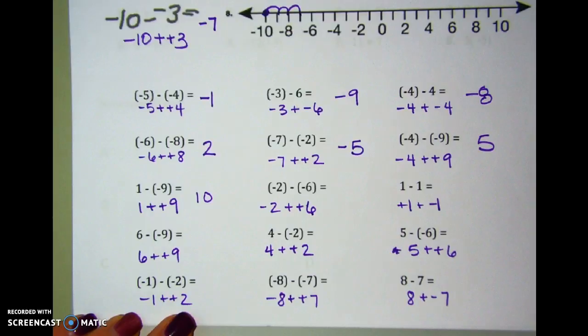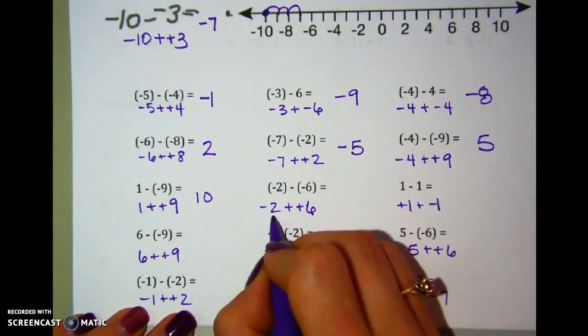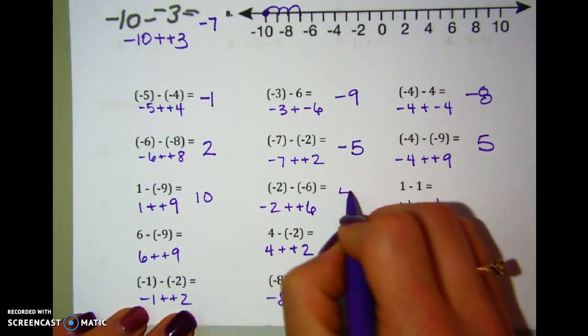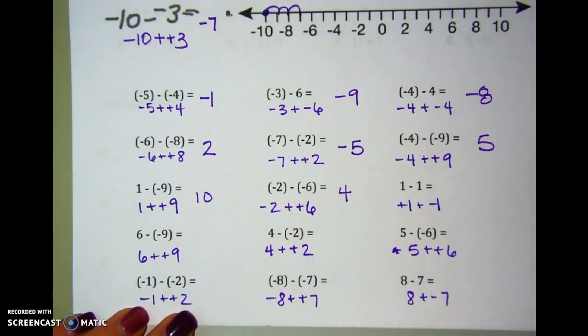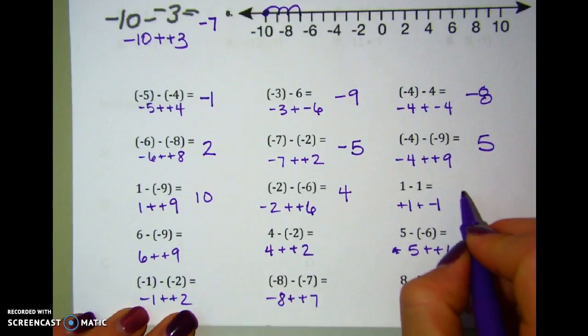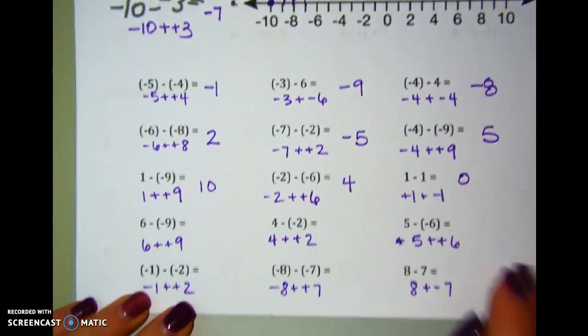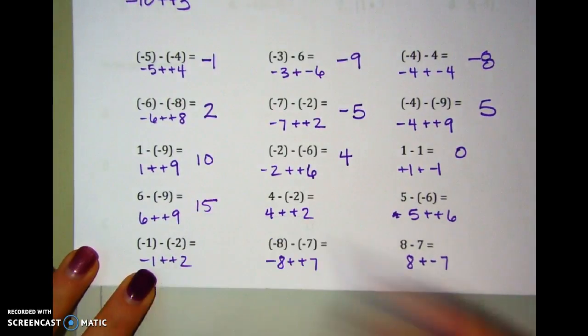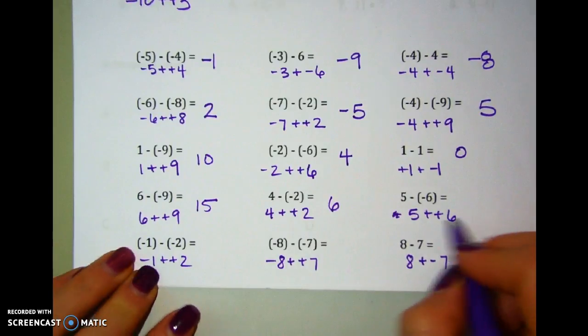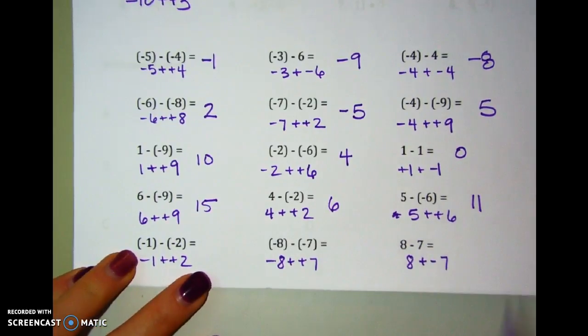1 plus 9 would make 10. Negative 2 plus 6. So a positive and a negative, I'm going to subtract to get 4. And the positive is bigger. 1 plus negative 1 cancel out to make 0. 6 plus 9 combined to make 15. 4 plus 2 combined to make 6. 5 plus 6 combined to make 11.